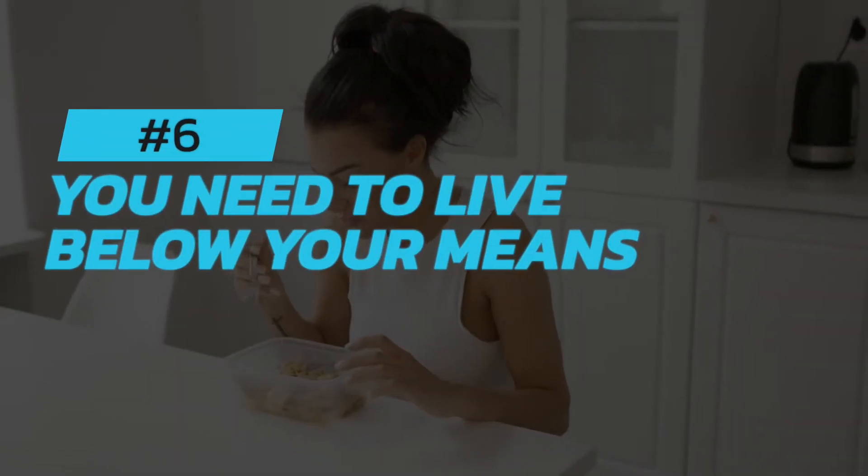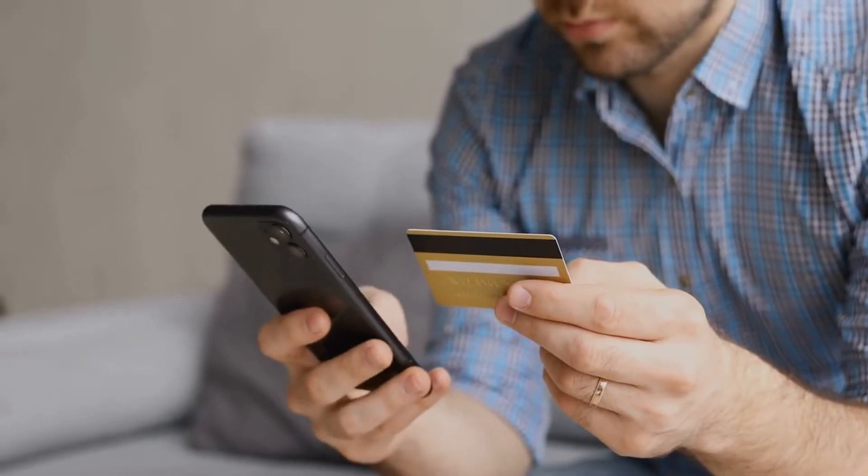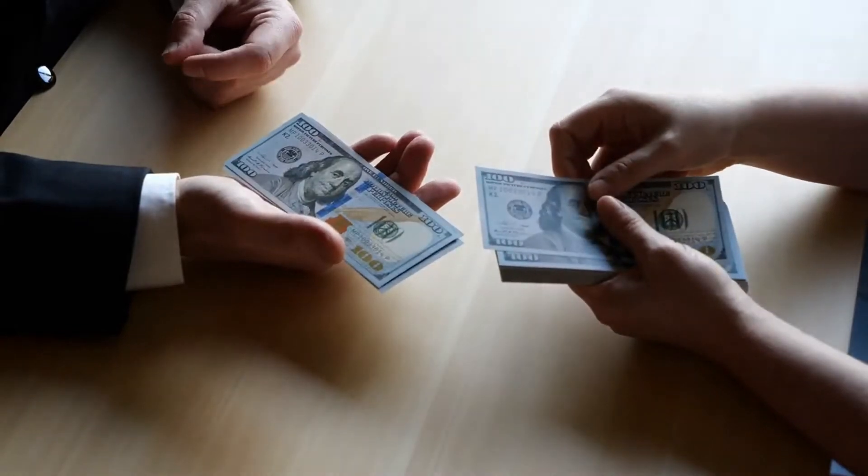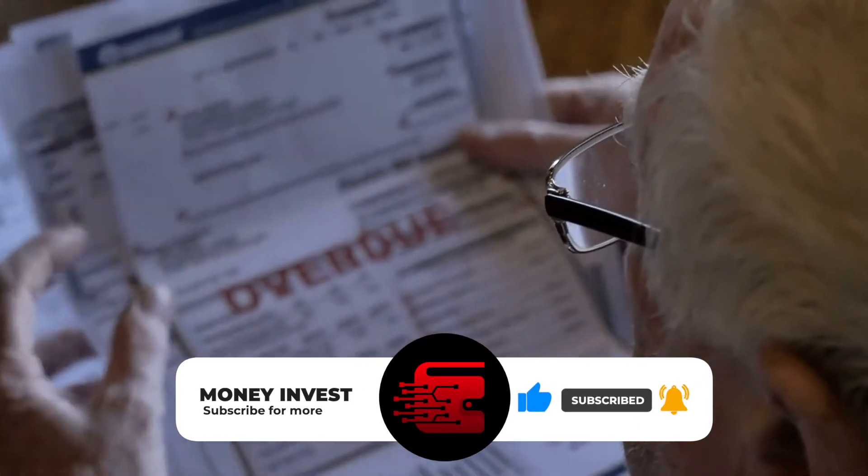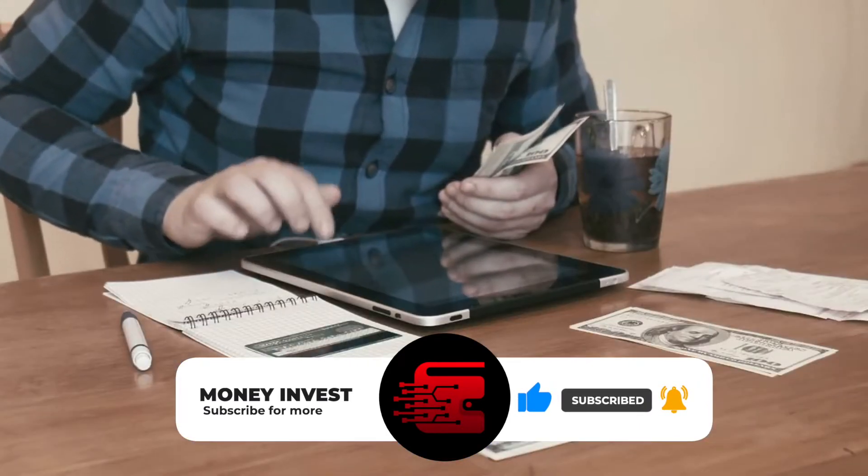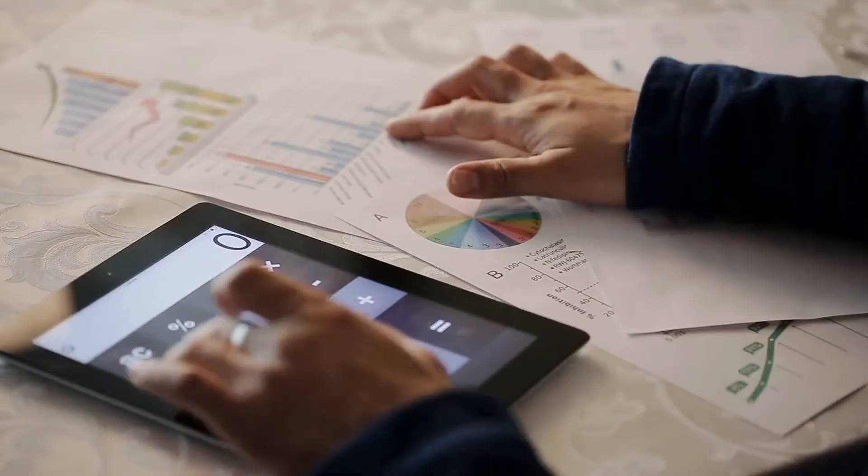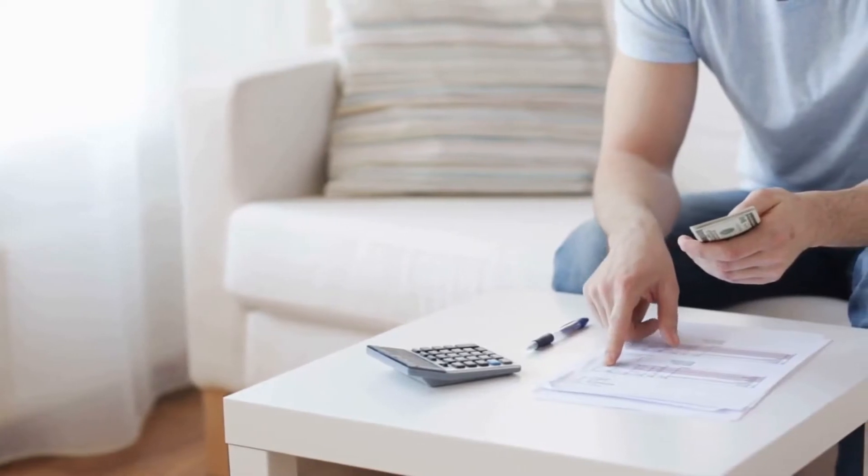Number six: You need to live below your means. If you want to save money, you need to spend less than you earn. This allows you to save money and pay off debt. It's also important to live below your means so you don't end up in a financial crisis. If you're not sure how to do this, start by tracking your spending for one month. Then see where you can cut back. Try to find areas where you're spending more than you need to.